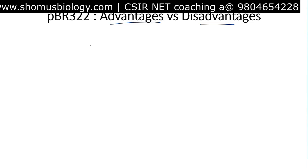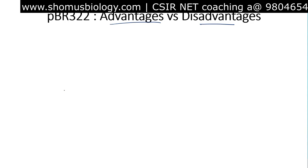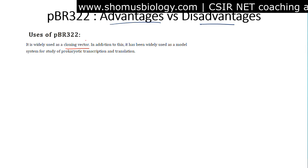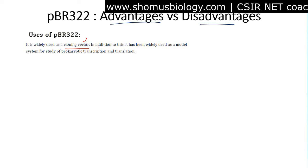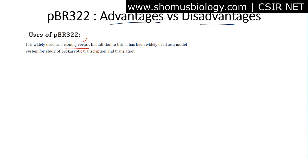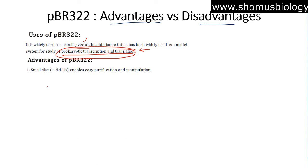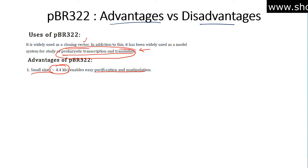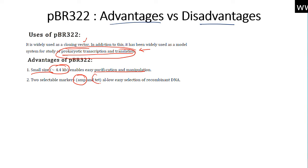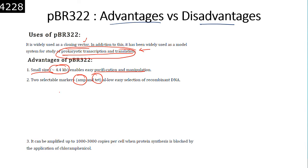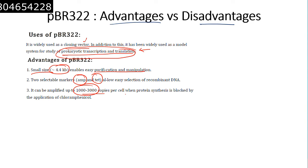The uses and advantages of PBR322: it is widely used as a cloning vector because of its ease of use, copy number maintenance, and transformation efficiency. It is also widely used as a model system for studying prokaryotic transcription and translation. Advantages include its small size of approximately 4.4 kilobases, which enables easy purification and manipulation, and the presence of two selectable markers — ampicillin and tetracycline resistance.